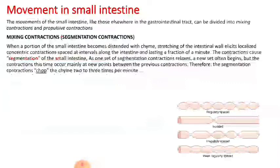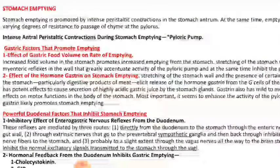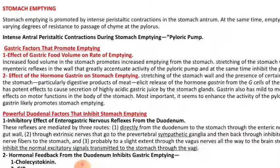Now we will discuss the third function: stomach emptying. There are factors that help emptying and factors that inhibit emptying. The first gastric factor is gastric food volume — when the gastric food volume is high or large, this causes stretching in the stomach and initiates a myenteric reflex. When the myenteric reflex is activated, it causes strong peristalsis and the pyloric pump begins to function. The second gastric factor is the effect of certain hormones, such as gastrin, which is secreted in the stomach.